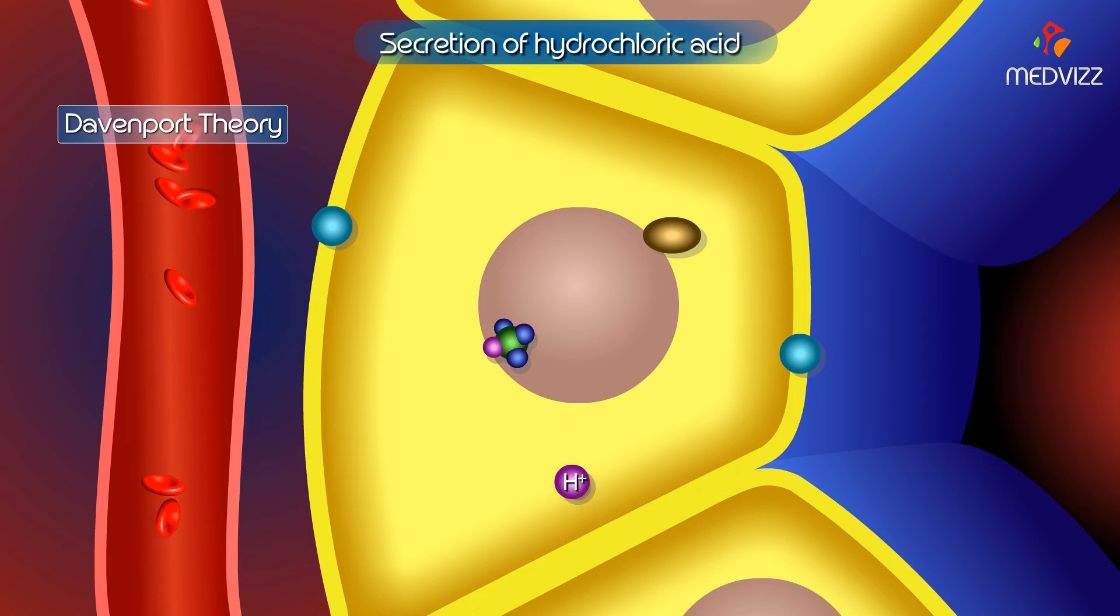The hydrogen ion is actively pumped into the canaliculi of the parietal cell. At the same time, chloride ion is also pumped into the canaliculus actively.